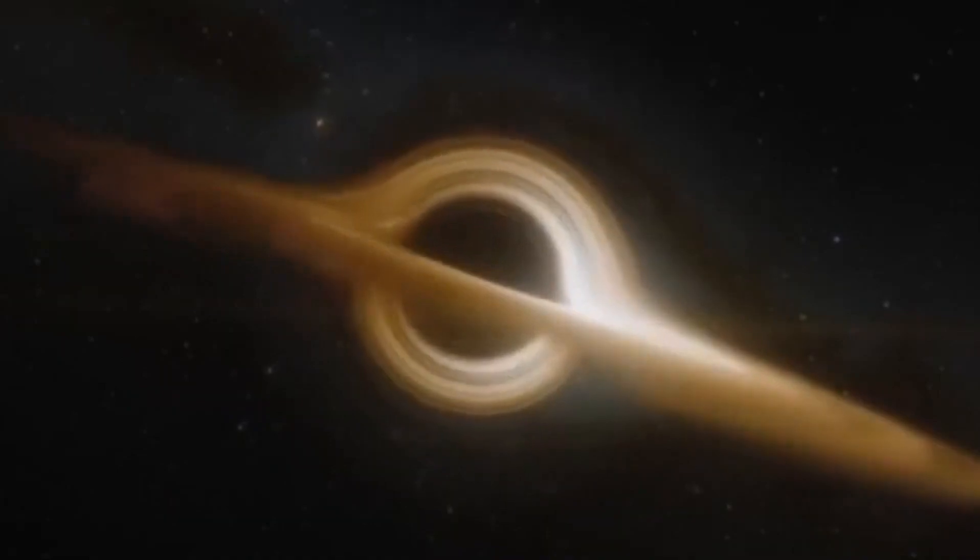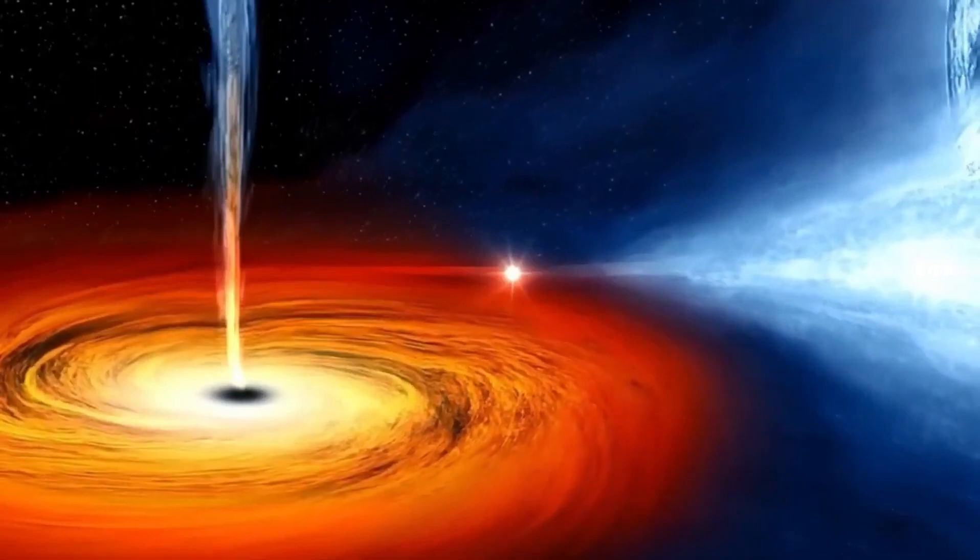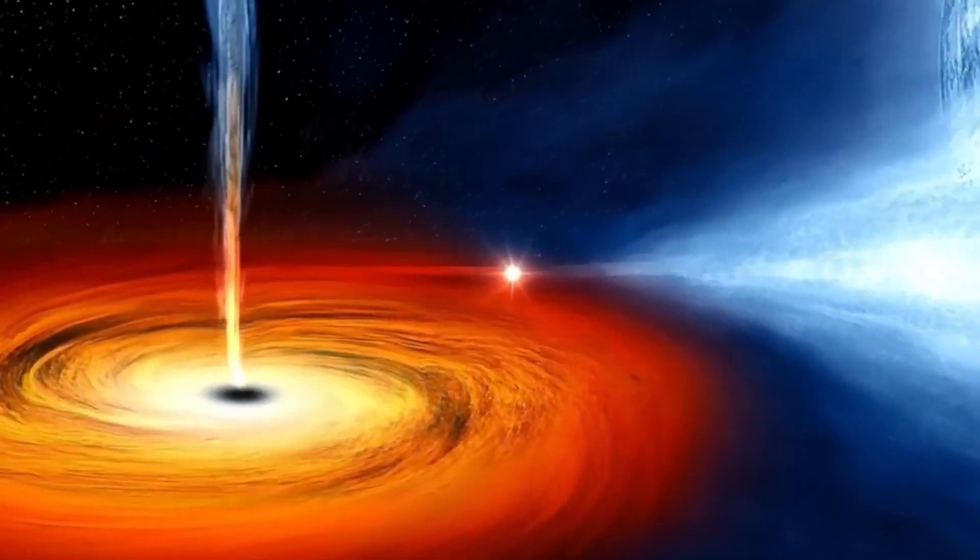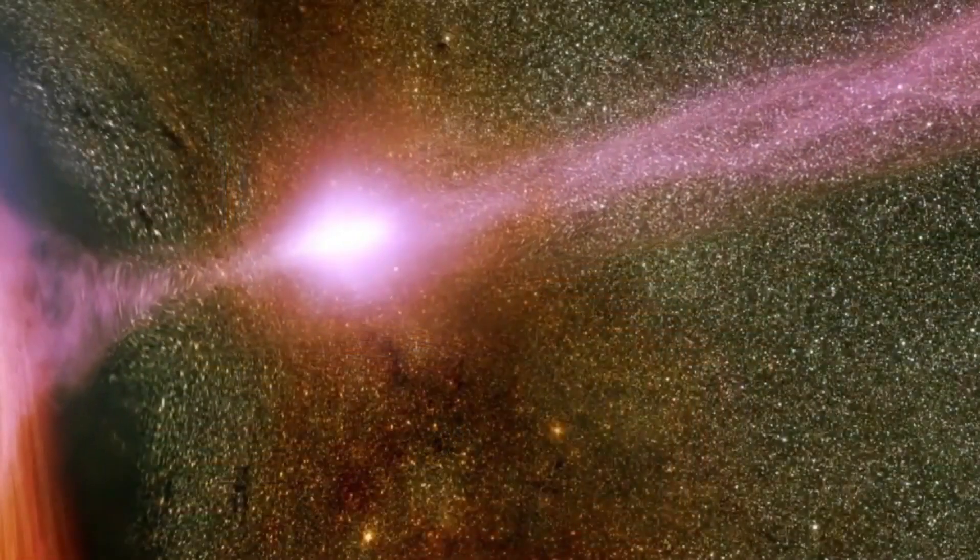For instance, Sagittarius A, the supermassive black hole at the heart of the Milky Way, boasts a mass equivalent to about 4 million suns and spans a distance similar to that between Earth and our sun.